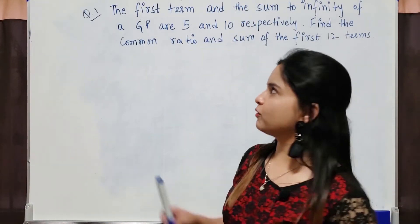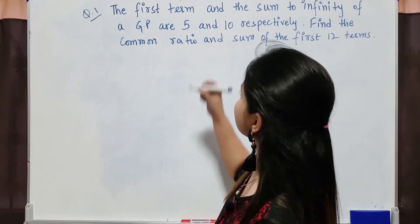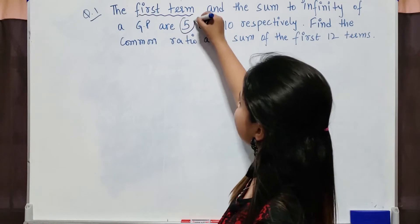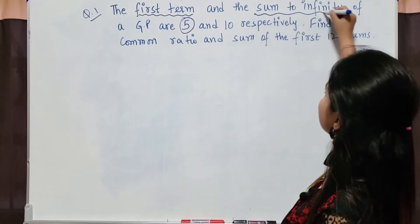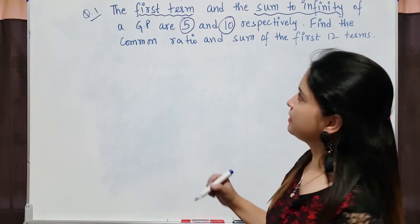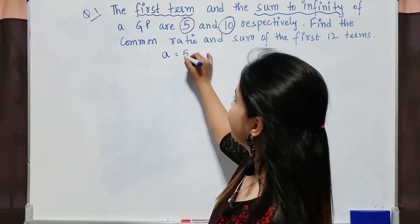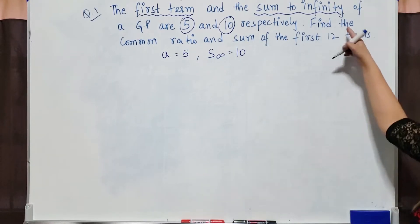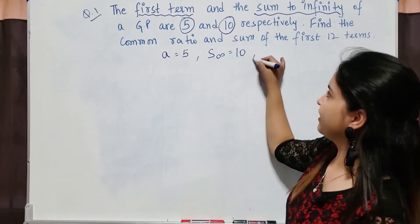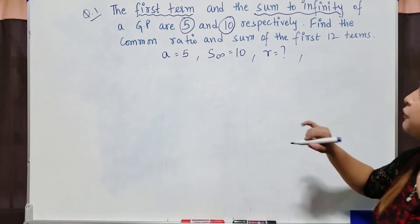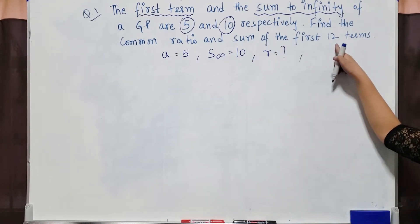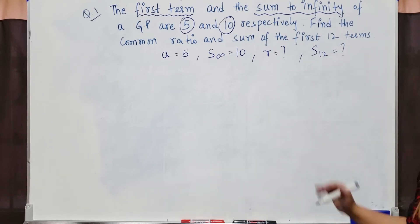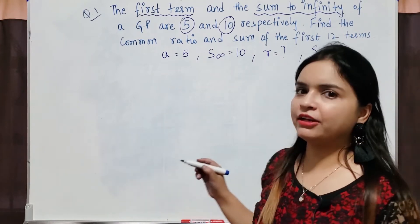Look at the first question. In the question, it is given that the first term of a GP is 5 and the sum to infinity of the same GP is 10. So first write down: a = 5 and S∞ = 10. Now you have to find the common ratio r, and you have to find the sum of the first 12 terms, that means S₁₂.